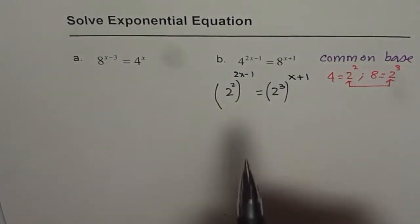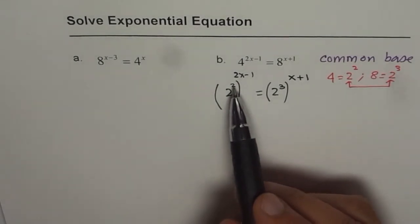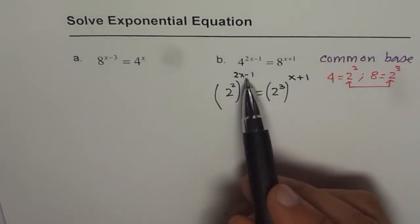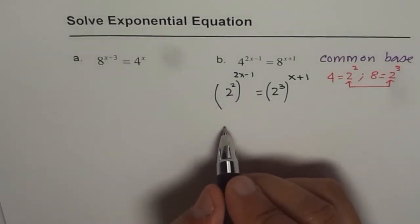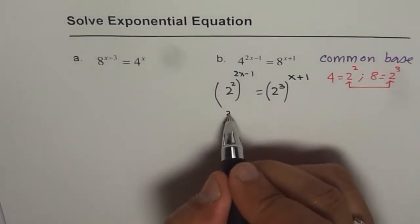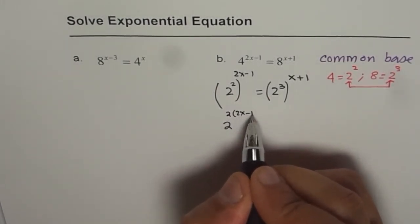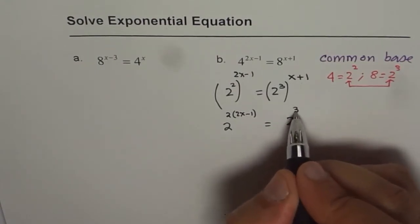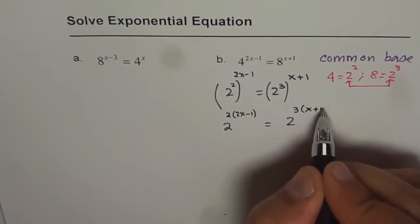Now we will apply the exponential laws. That is, when power of power is there, then we multiply them. So we get 2 to the power of 2 times 2x minus 1 equals 2 to the power of 3 times x plus 1, correct?